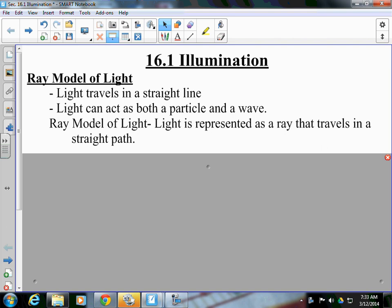It travels in a straight line as a wave and a particle, and the ray model of light is just explaining that it's represented as a ray that travels in a straight path, kind of combining those first two hyphen points.